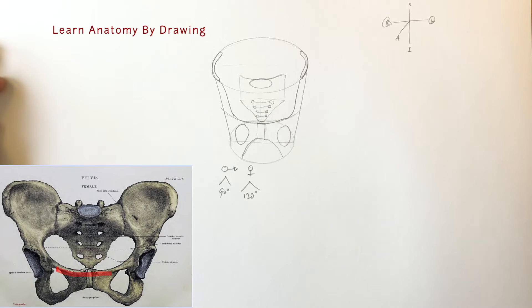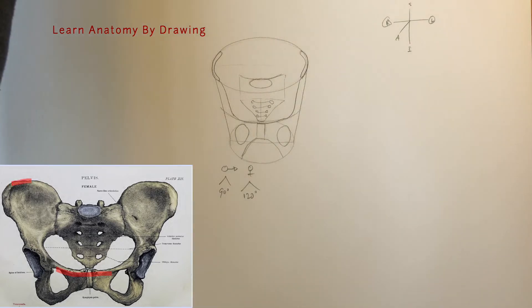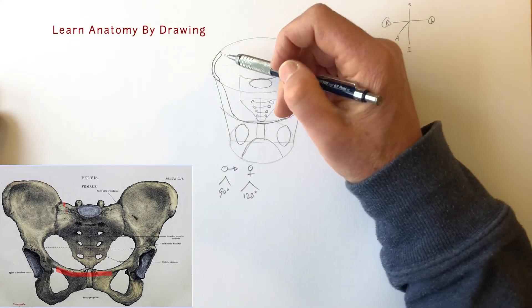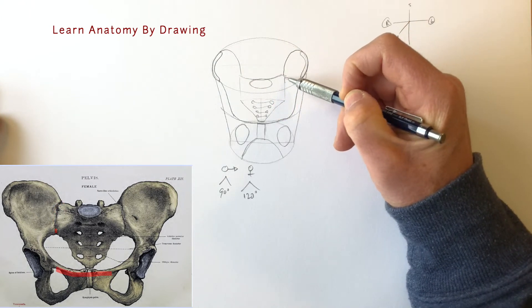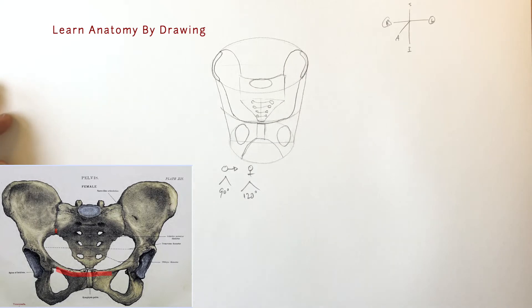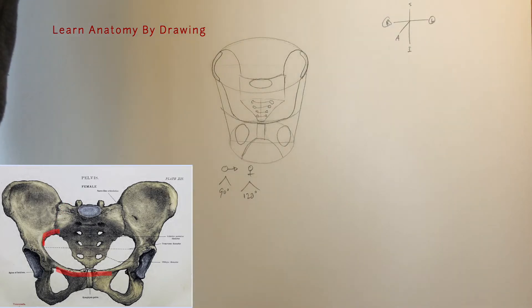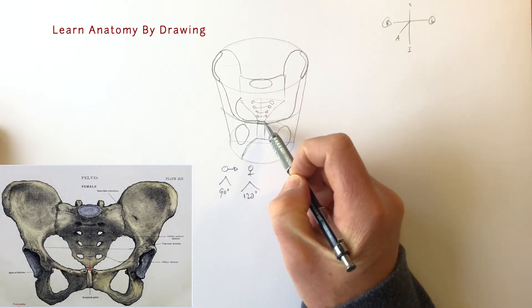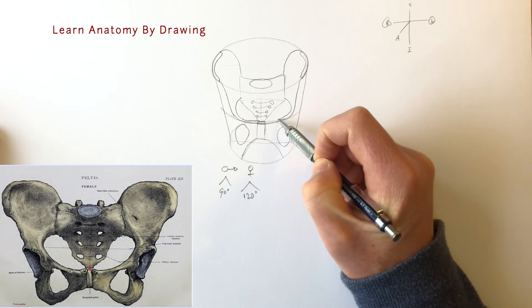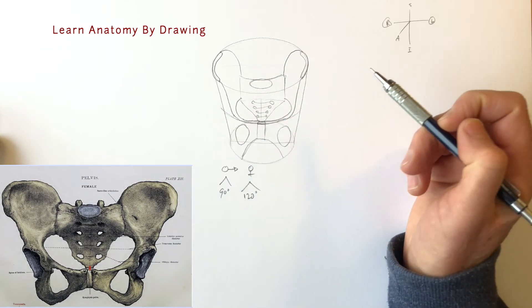The posterior aspect drops down here and forms the sacroiliac joint, we're going to label all this in a moment. Just drop that down like that into that joint there. Then you can see this will be the anterior portion of the sacroiliac joint wrapping around. From here wrap that around and bring it around like this, just put that pubic symphysis in there.